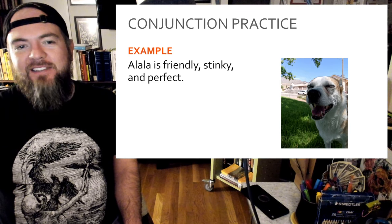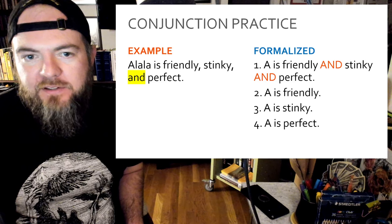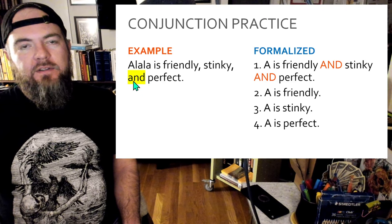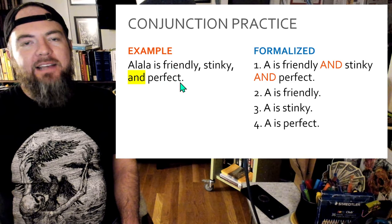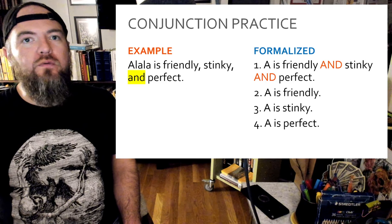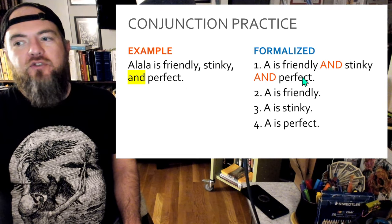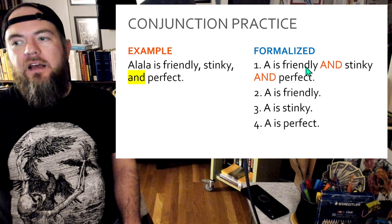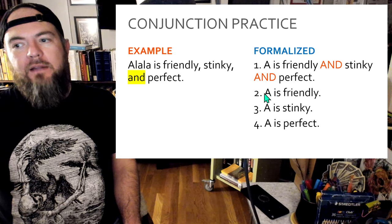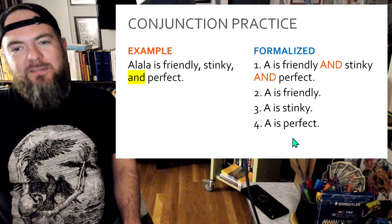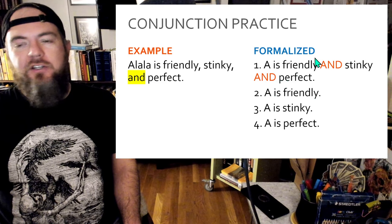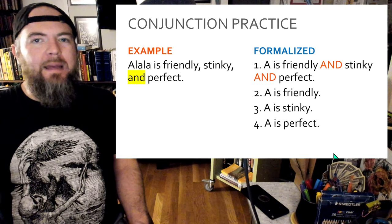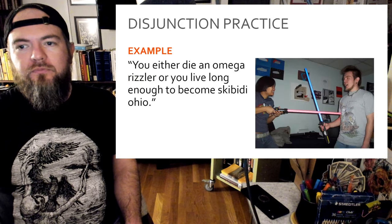Shameless promotion of my roommate. If you were able to work through the example, you should have seen there is a conjunction — an 'and.' All of the things joined by 'and' have to be true for the statement to be true. So if 'Alala is friendly and stinky and perfect' is true, you can simplify out: she is friendly; she is stinky; she is perfect. That's what's happening in a conjunction. Part of practice is spending time with examples to see how they work out.